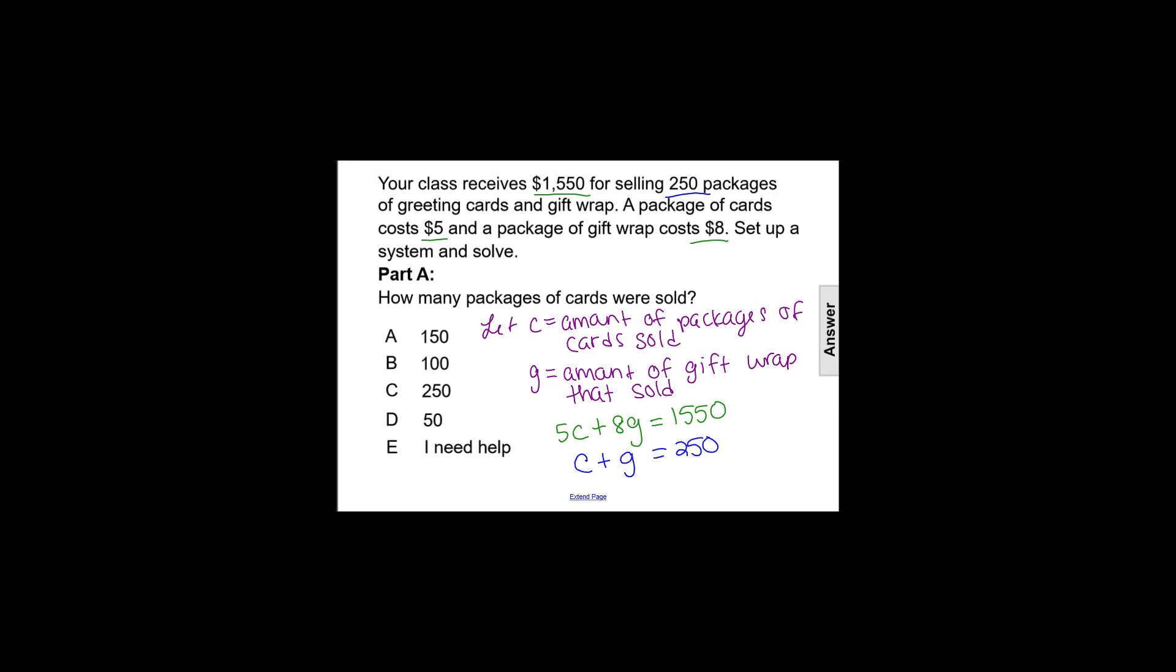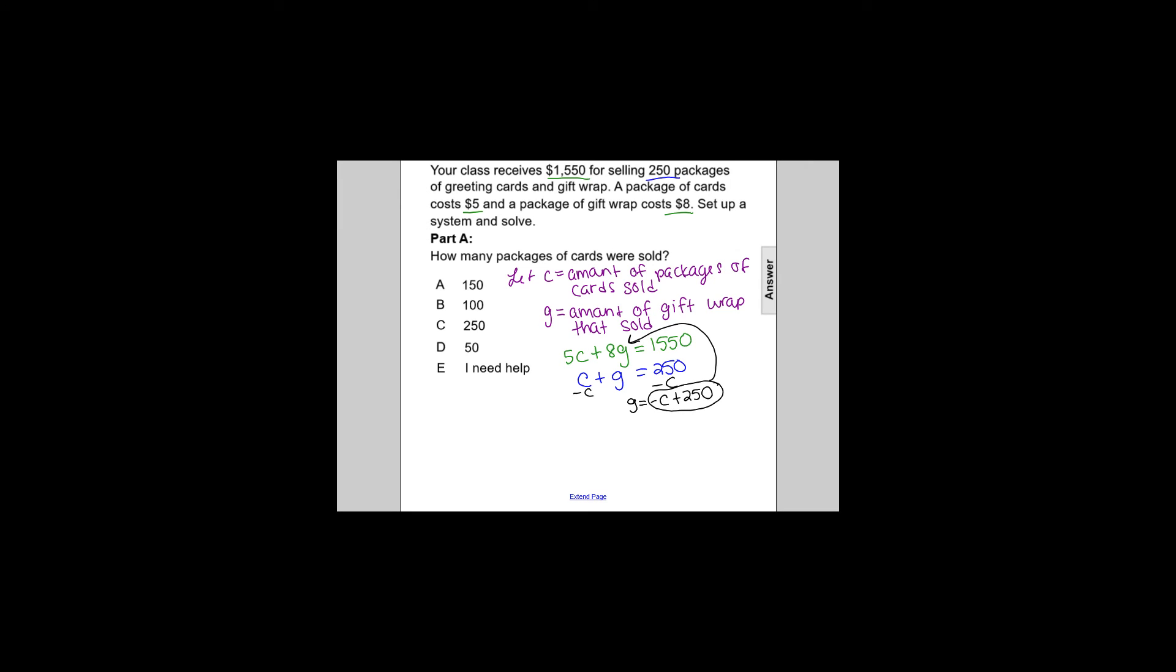So to solve for G, we're going to subtract C from both sides in that blue second equation, so that would be G equals negative C plus 250. And that's what we're going to substitute in to the other equation. We can get a little more room here.